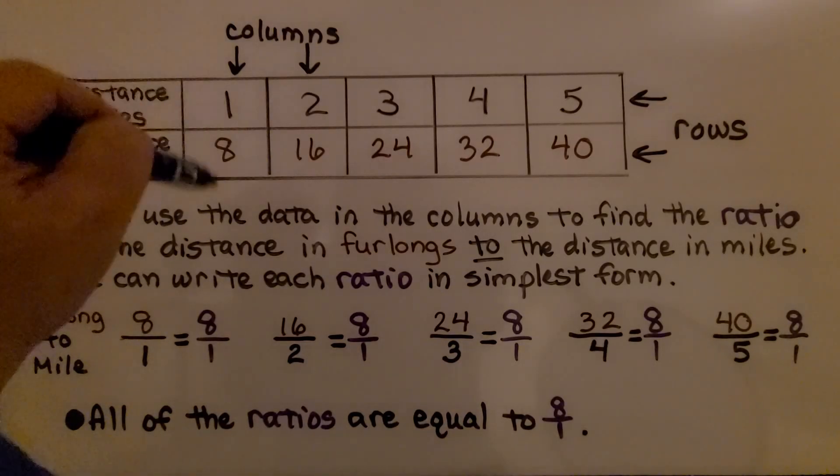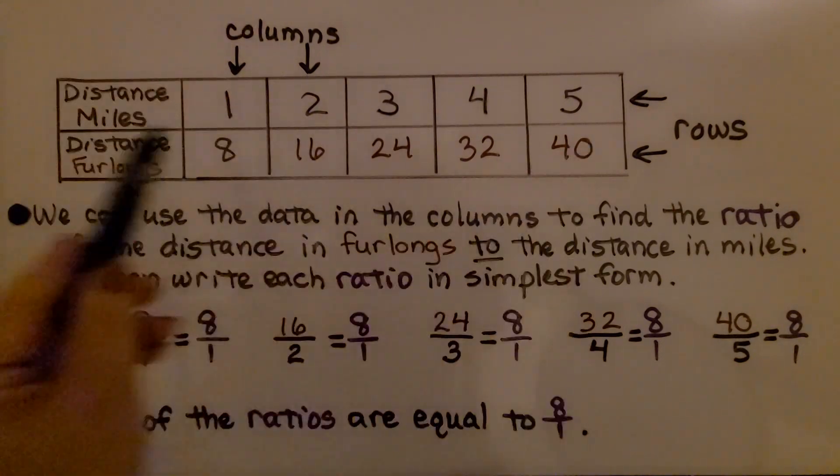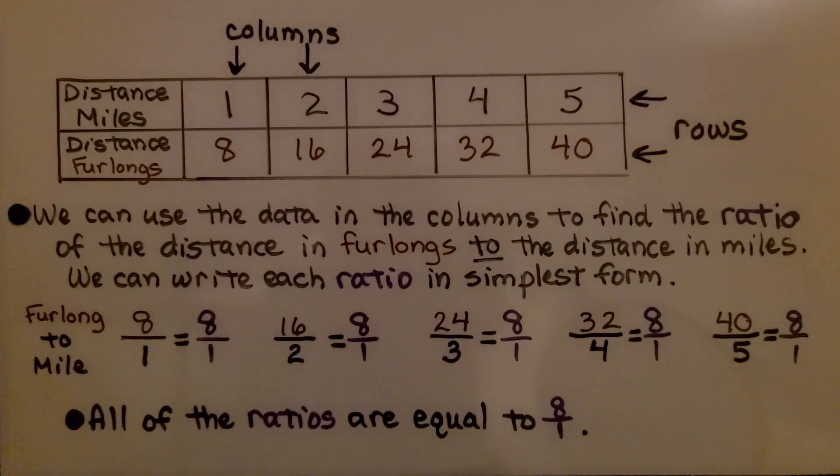So if you remember, columns go vertically and rows go horizontally. We can use the data in the columns to find the ratio of the distance in furlongs to the distance in miles. And we can write each ratio in simplest form.